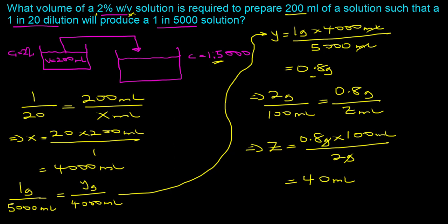Let's summarize the three key steps. First, determine the total volume of the preparation using the 1 in 20 dilution information and the original volume prepared — that gives us the total quantity of 4000 milliliters. Second, determine the actual amount of solute in the 4000 milliliter preparation using the 1 in 5000 concentration — that gives 0.8 grams. Third, use that amount of solute to determine the volume of the two percent weight by volume solution, since all 0.8 grams comes from that two percent solution used to make the 200 milliliter preparation.